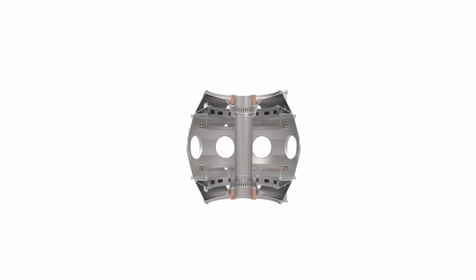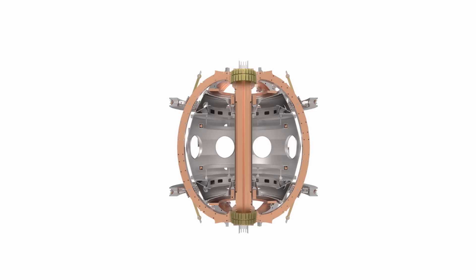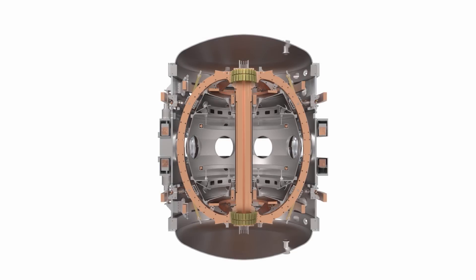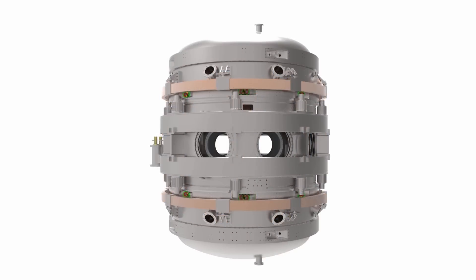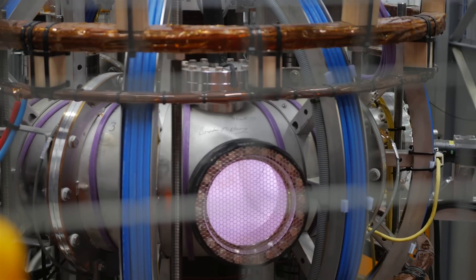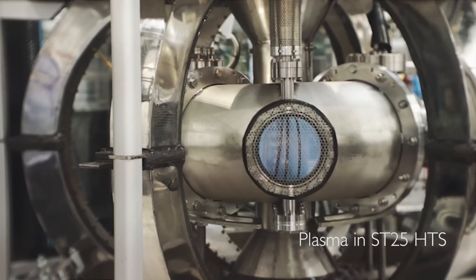The core premise of Tokamak Energy is that the compact spherical Tokamak is a good route forward for getting to fusion power quickly. The thing about having a compact spherical Tokamak is that you can make a small machine and cycle quickly through prototypes.